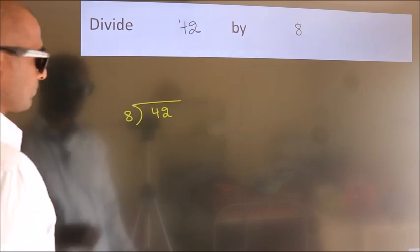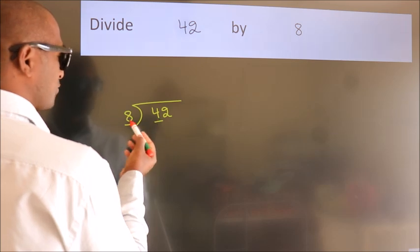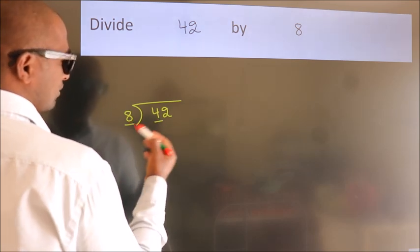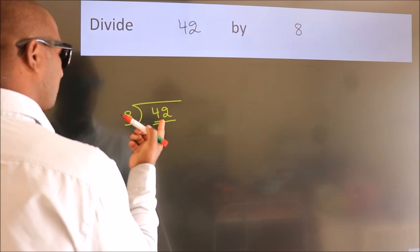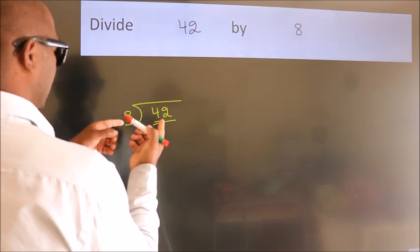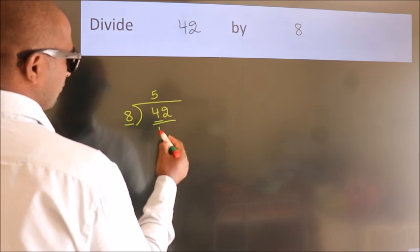Next, here we have 4, here 8. 4 is smaller than 8, so we should take 2 numbers: 42. A number close to 42 in the 8 table is 8 times 5 equals 40.